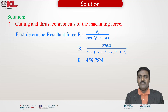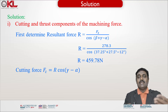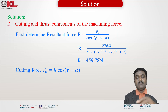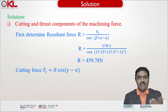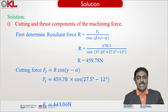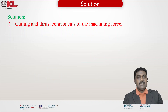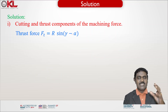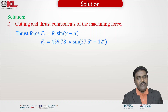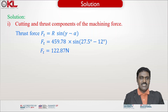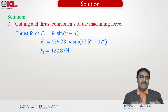Once the resultant is obtained, the remaining components can be found. The cutting force Fc = R × cos(γ − α). Substituting R = 459.78 and the known angles gives the cutting force Fc = 443.06 Newtons. The thrust force Ft = R × sin(γ − α). Substituting the data gives the thrust force Ft = 122.87 Newtons. This completes the first item.